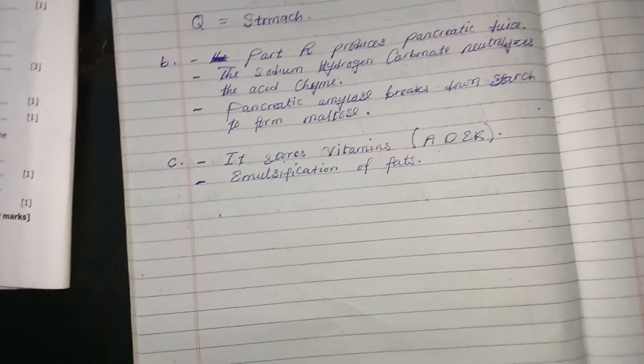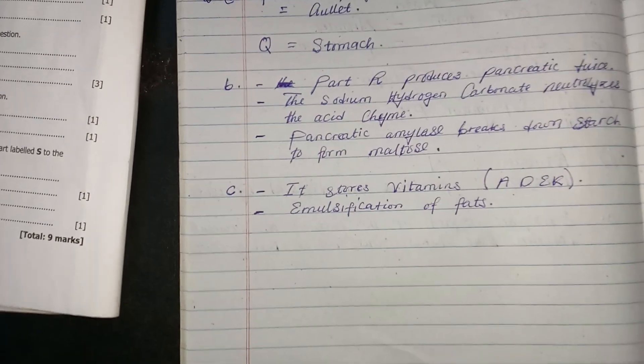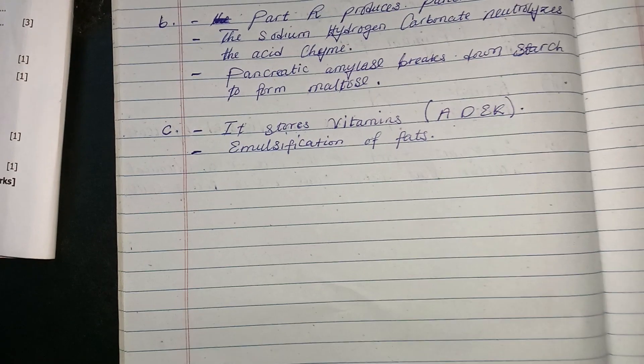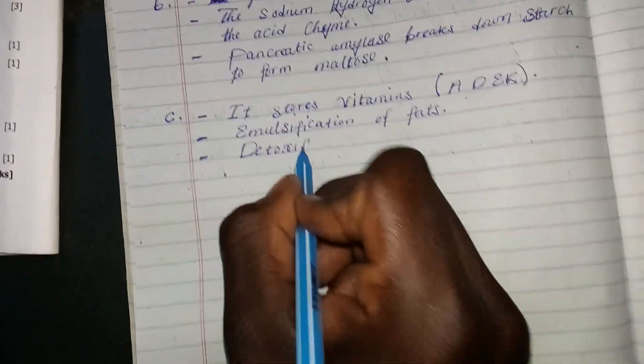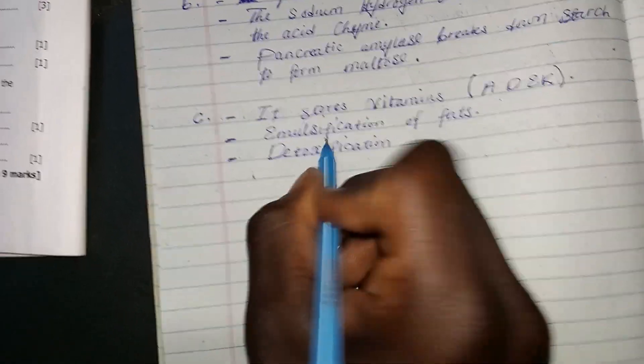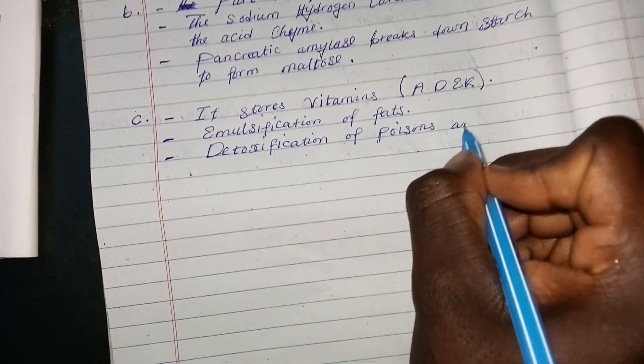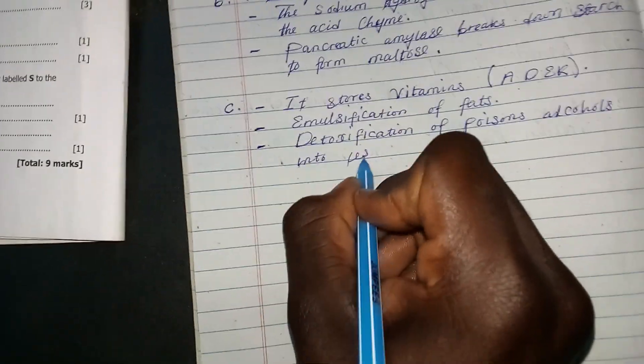The part labeled S also functions by detoxification of poisons and alcohol by converting them into less toxic substances.